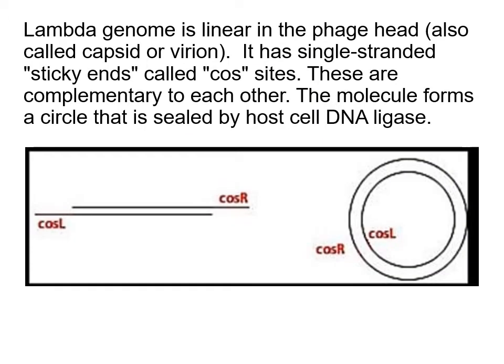The genome of lambda is linear when it's in the phage head. It's injected into the cell as a double-stranded linear molecule which has sticky ends called cos sites. These single-stranded ends are complementary to each other and will form a circle, then be sealed by the host DNA ligase at the very earliest stages in the lambda replication process.